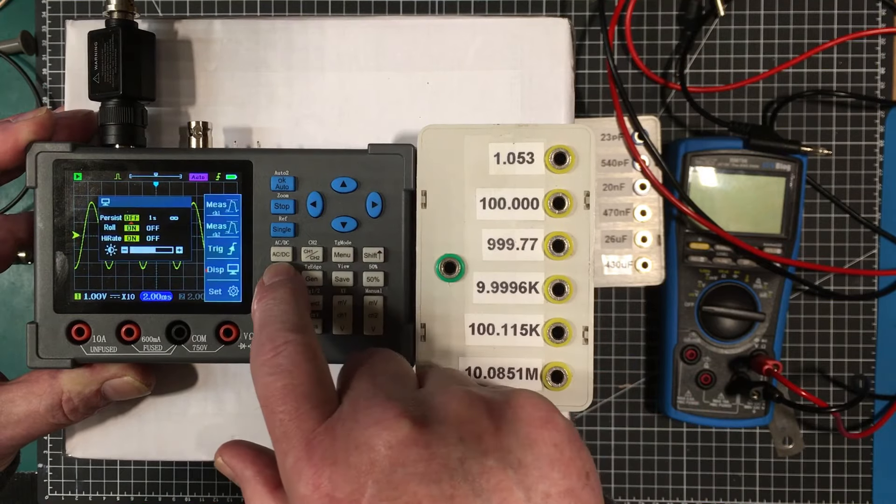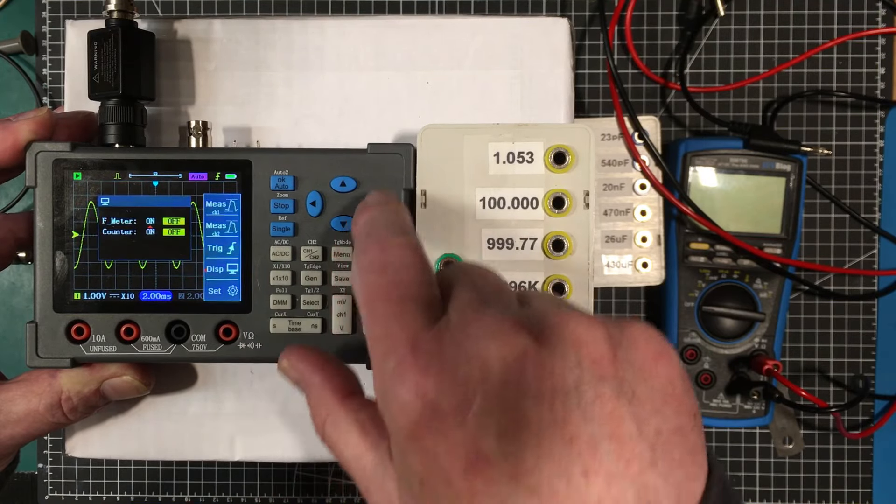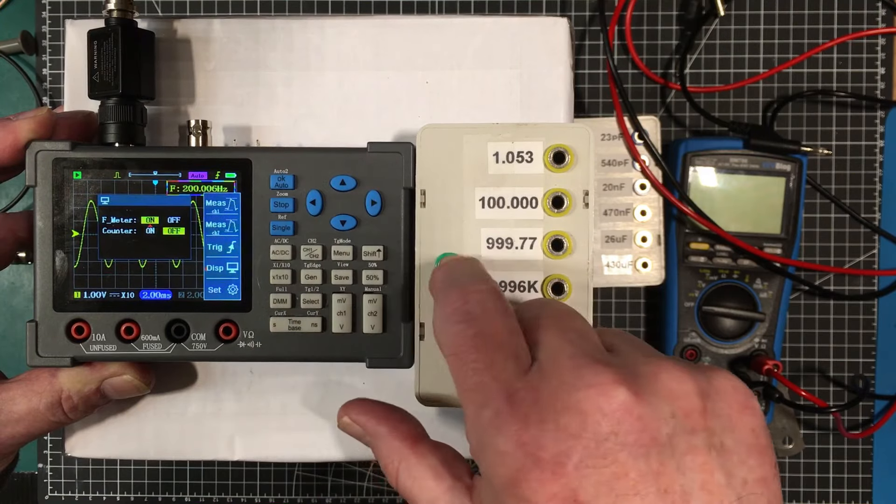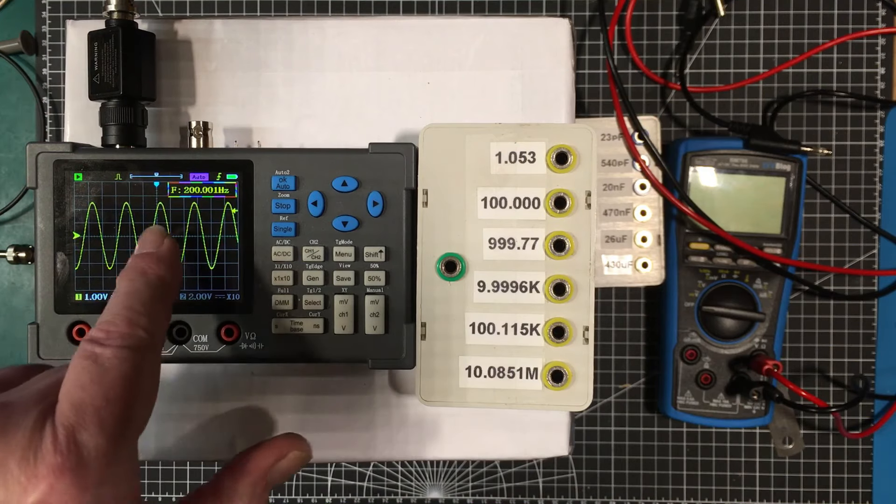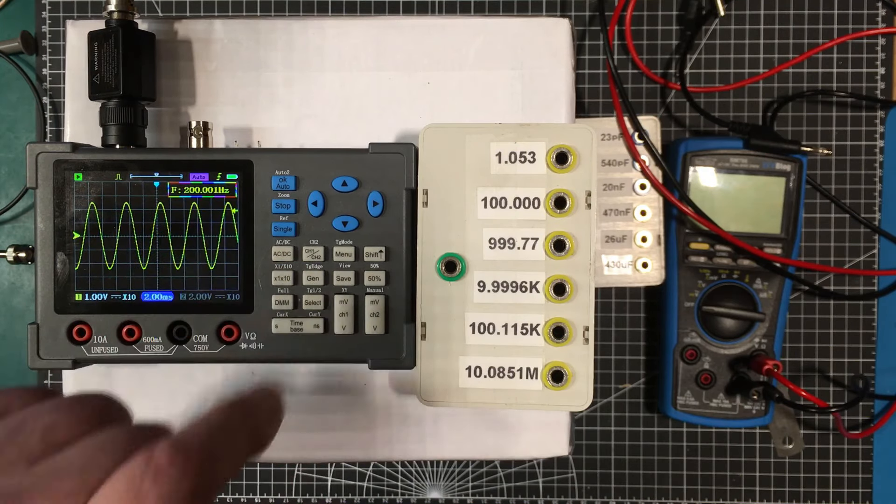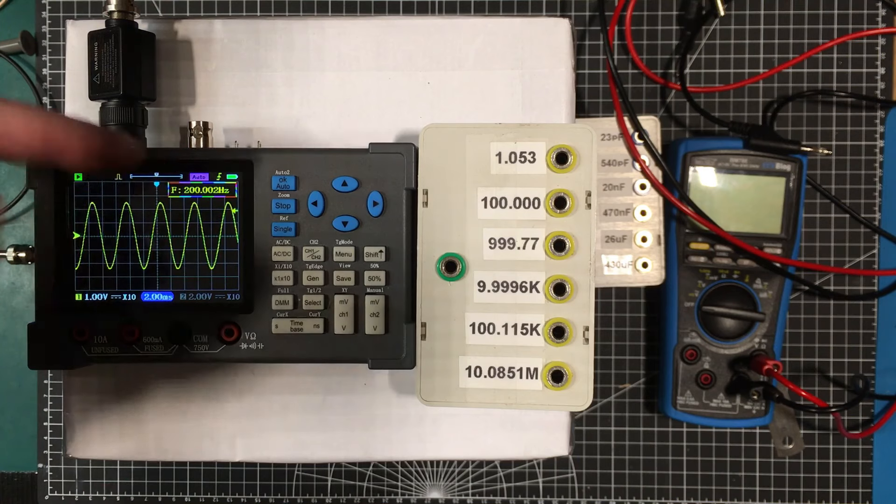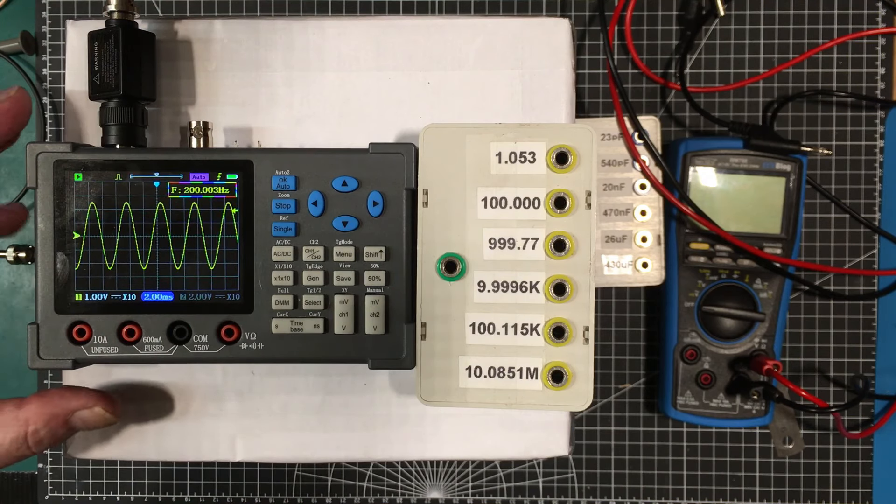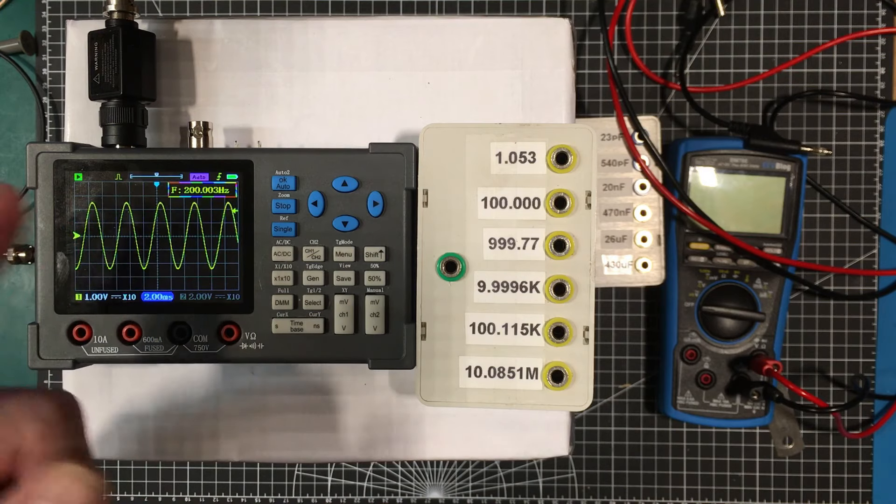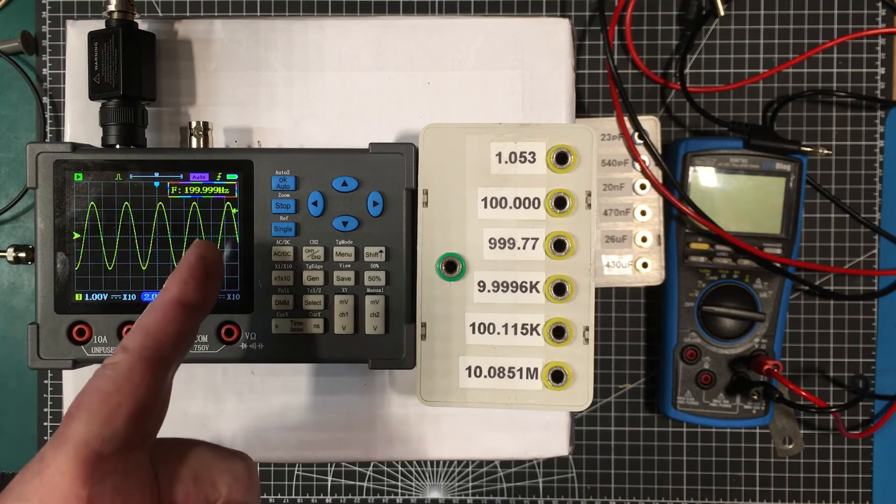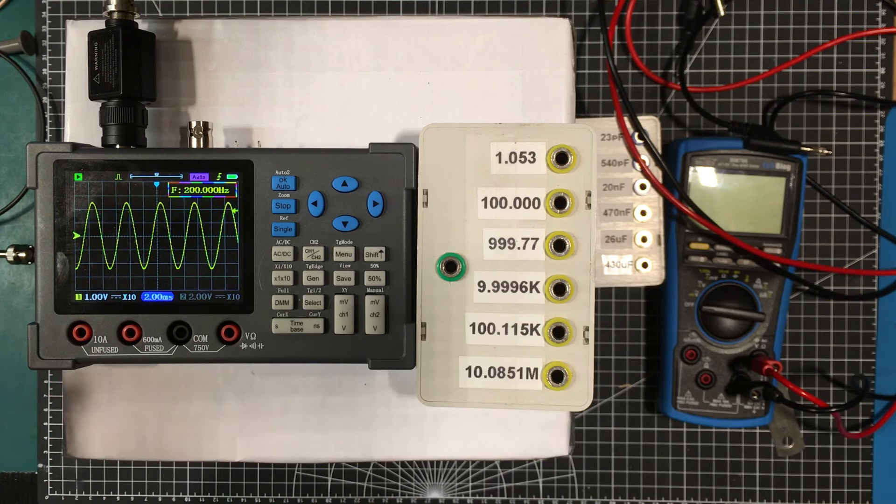So let's get into it here. We've got 200 hertz going into it now, and this also gives you an idea of the precision of the internal time base. The 200 hertz I'm running into it is coming from a generator that the time base is a GPSDO, so I know that's accurate. They claim that the time base in here was accurate to within 0.01% and it looks like it surely is. That's good. It meets that specification.